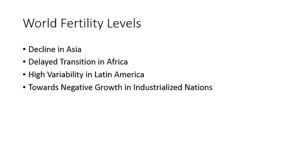Generally speaking, fertility levels are on the decline in Asia. That's not true of every country in Asia, but as an overall region that is true. There's also a 'delayed transition' term derived from demographic transition theory, which essentially means that Africa has high fertility levels because of its delayed transition into industrial and post-industrial society.